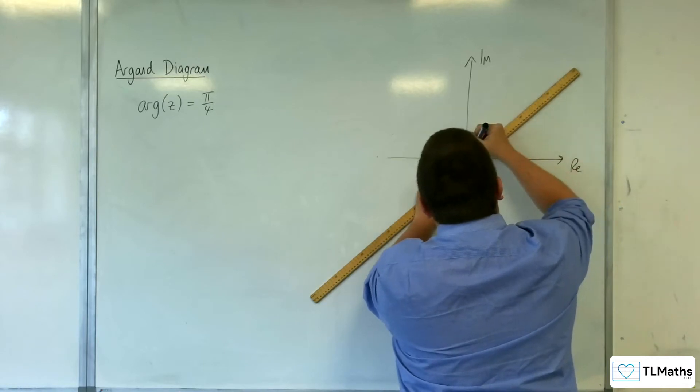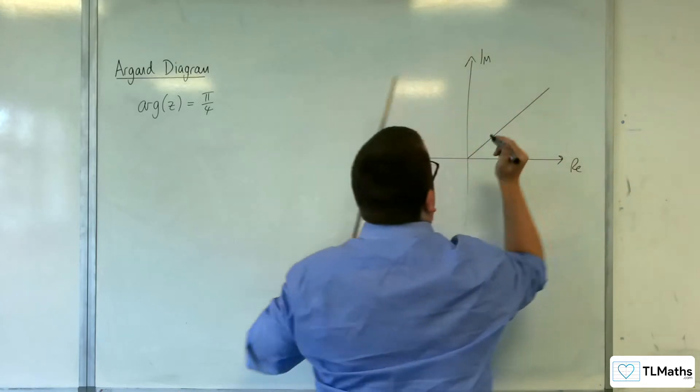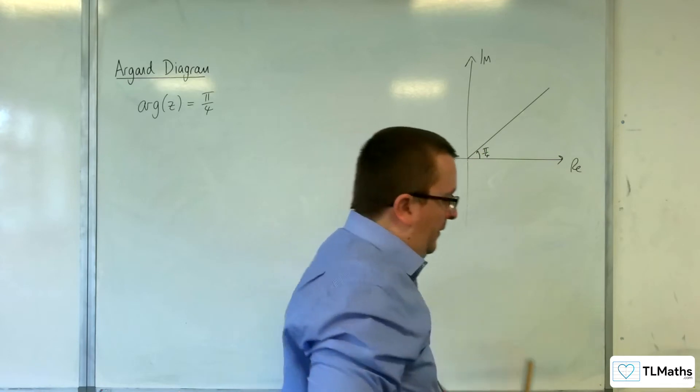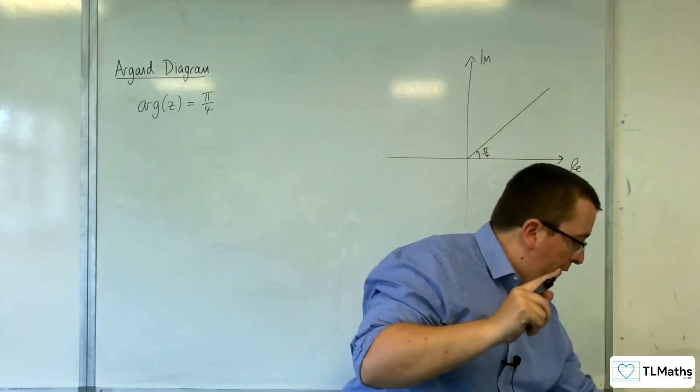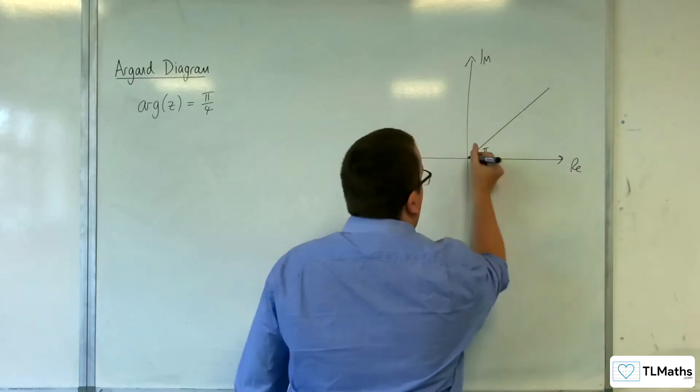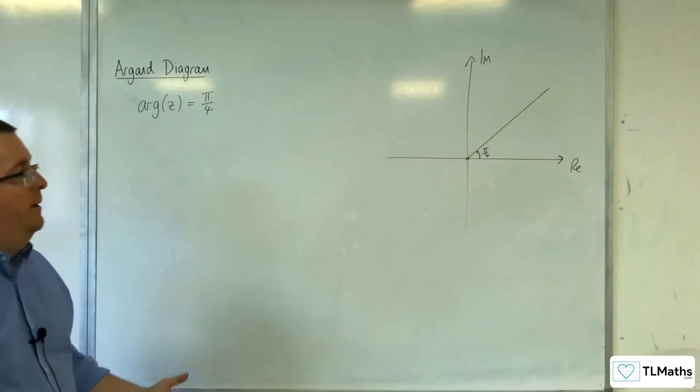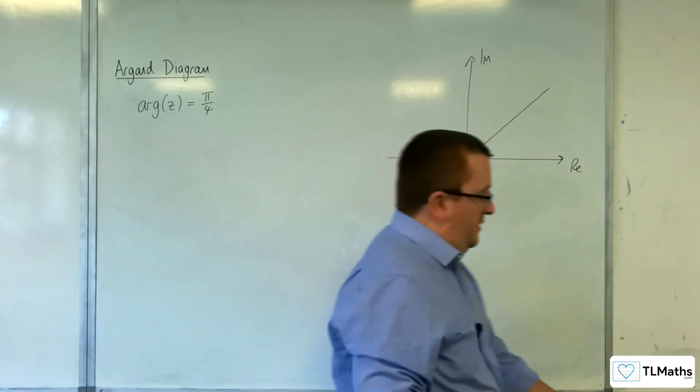So it could be any point that is along this line that is making this angle of pi over 4 with the positive real axis. Apart from, of course, the origin, where we know it's undefined. The argument of the origin is undefined.